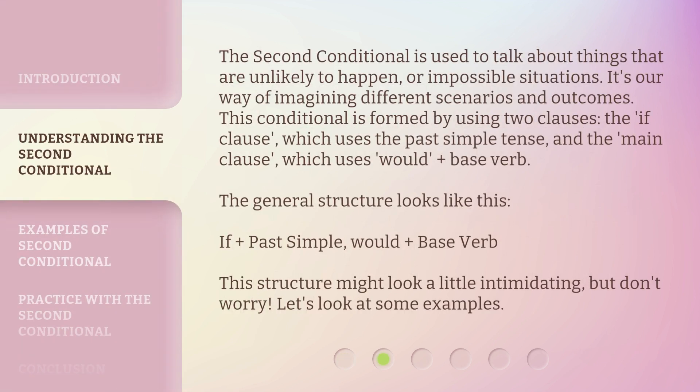The second conditional is used to talk about things that are unlikely to happen, or impossible situations. It's our way of imagining different scenarios and outcomes. This conditional is formed by using two clauses: the 'if clause,' which uses the past simple tense, and the 'main clause,' which uses 'would' plus base verb. The general structure looks like this: if plus past simple, would plus base verb. This structure might look a little intimidating, but don't worry. Let's look at some examples.